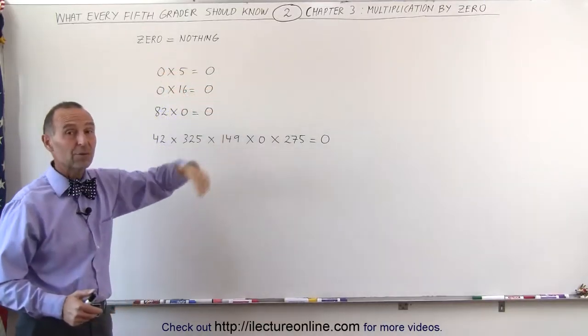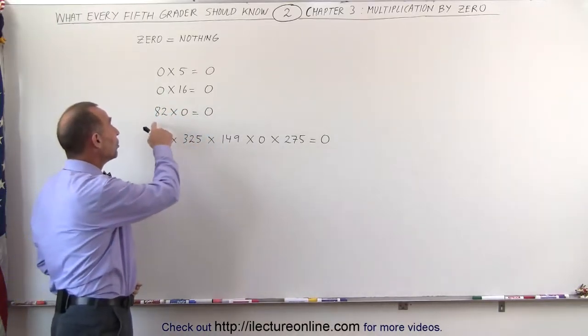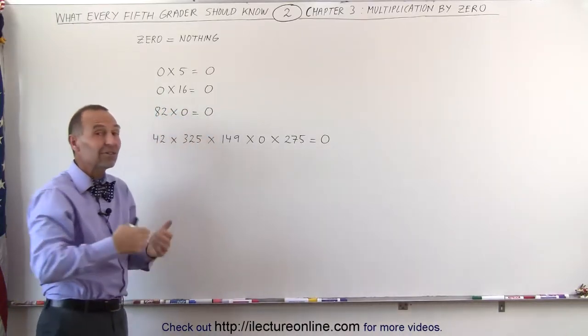Zero times five is zero. Zero times sixteen is zero. Even when we reverse the numbers and we write 82 times zero, that is still zero. 82 times nothing is still nothing.